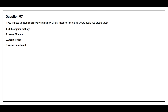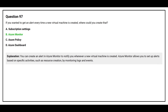Question number 97: If you wanted to get an alert every time a new virtual machine is created, where could you create that? Option A: Subscription Settings. Option B: Azure Monitor. Option C: Azure Policy. Option D: Azure Dashboard. The correct answer is Option B: Azure Monitor. You can create an alert in Azure Monitor to notify you whenever a new virtual machine is created. Azure Monitor allows you to set up alerts based on specific activities, such as resource creation, by monitoring logs and events.